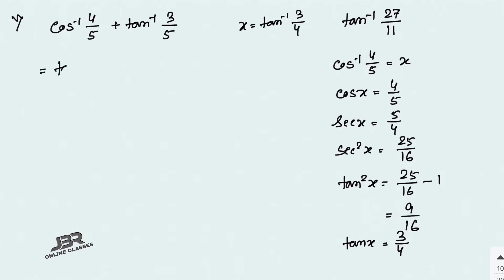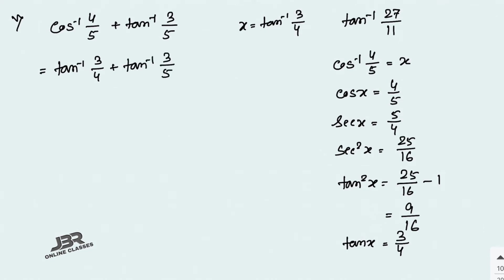So we write tan⁻¹(3/4) + tan⁻¹(3/5). Now apply the tan⁻¹(x) + tan⁻¹(y) formula to get tan⁻¹(27/11). I hope you can solve this one the same way as the previous one.